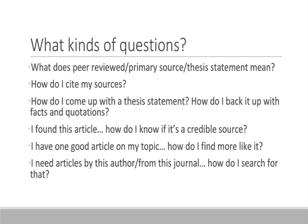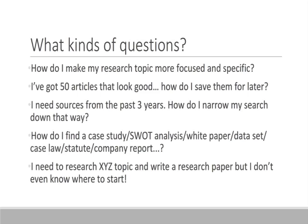We can help you cite your sources, both in terms of how to format the citations and in terms of when, where, and why to cite. We can help you narrow your research topic down and phrase it as a thesis statement. We can help you learn to evaluate your information sources to see if they're relevant and credible enough to use for your research. We can help you find your information sources from whatever starting point you have — whether that's one author you know is good, one journal that's been recommended, or one article that's perfect but you need ten more just like it. We can help you make your research topic more manageable and specific, save your searches for later, and use other technical features of our databases. We can also help you narrow down your search by all sorts of different criteria, including publication date or document type.